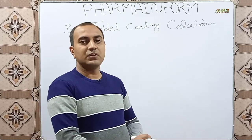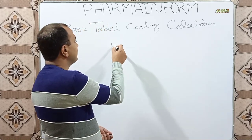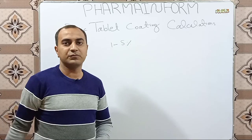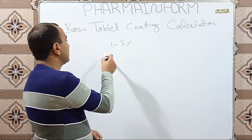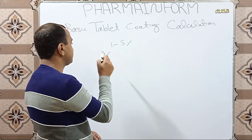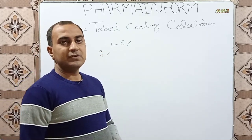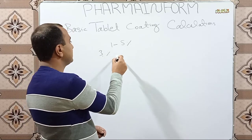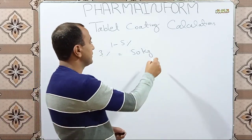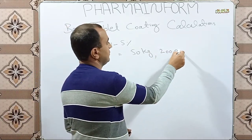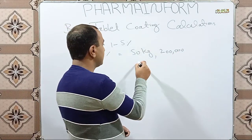We will take the example of film coating. In film coating we can use 1 to 5 percent of coating material. In this example, we want to take 3 percent coating material for a batch of tablets having 50 kg quantity. The number of tablets is 2 lakh (200,000) and the weight of an individual tablet is 250 mg.